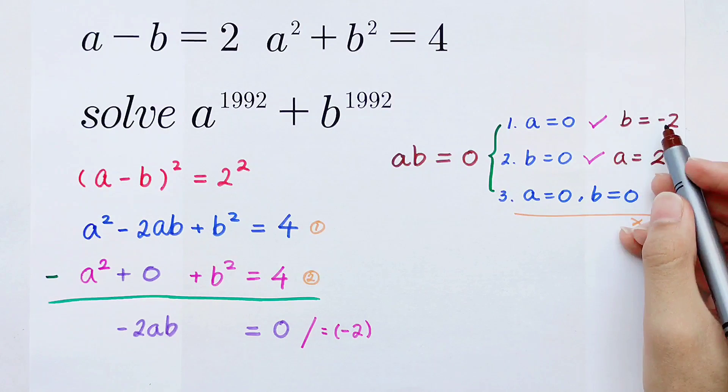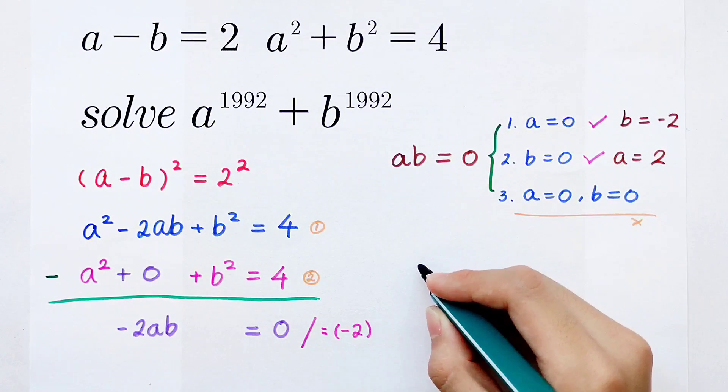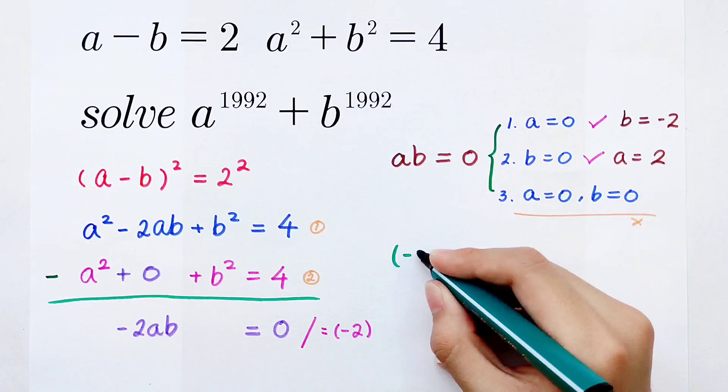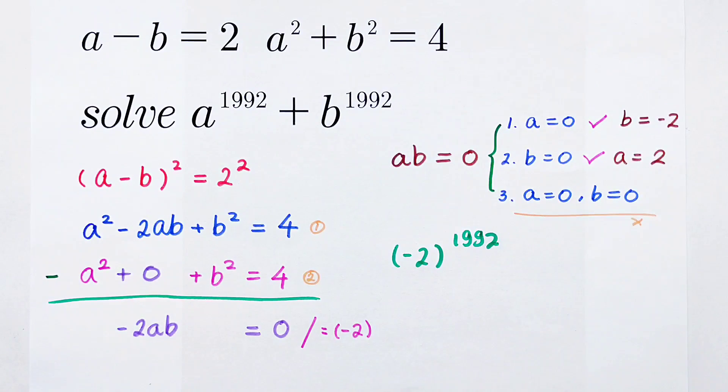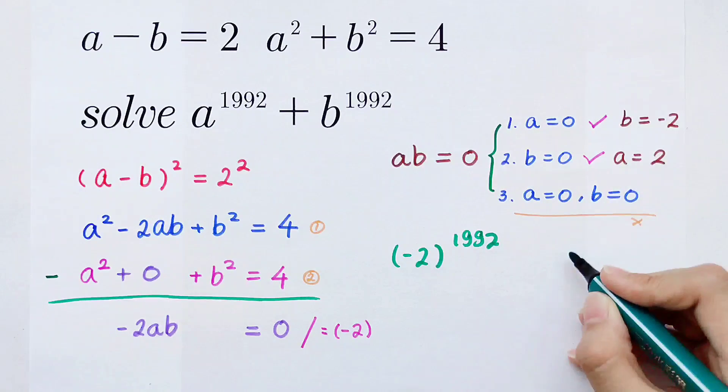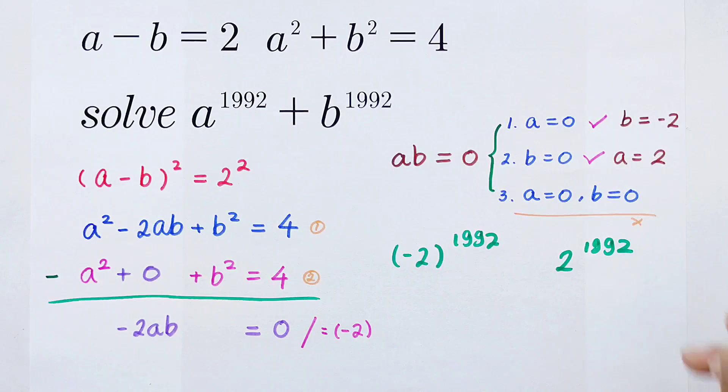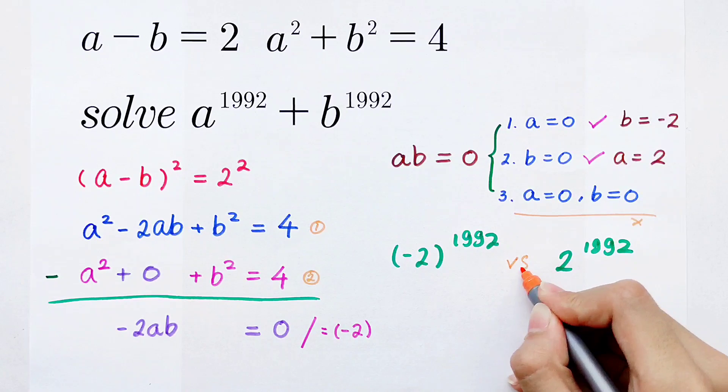So when b is minus 2 and a is 0, we can get the answer is minus 2 to the power of 1992. And the second case, b is 0 and a is 2, we can get the answer is 2 to the power of 1992. But are the values the same?